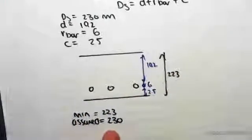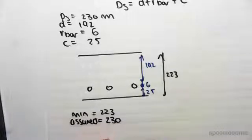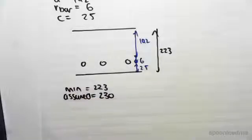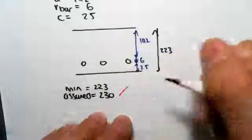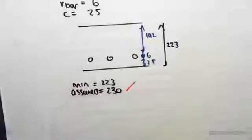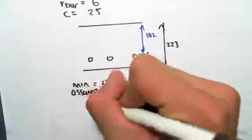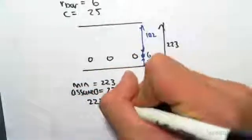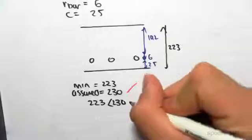Now that's good. Because our minimum depth is less than our assumed depth, it means that our assumed depth will obviously work. Because anything more than 223 millimeters is satisfied. So because 223 is less than 230, this means that we are compliant.